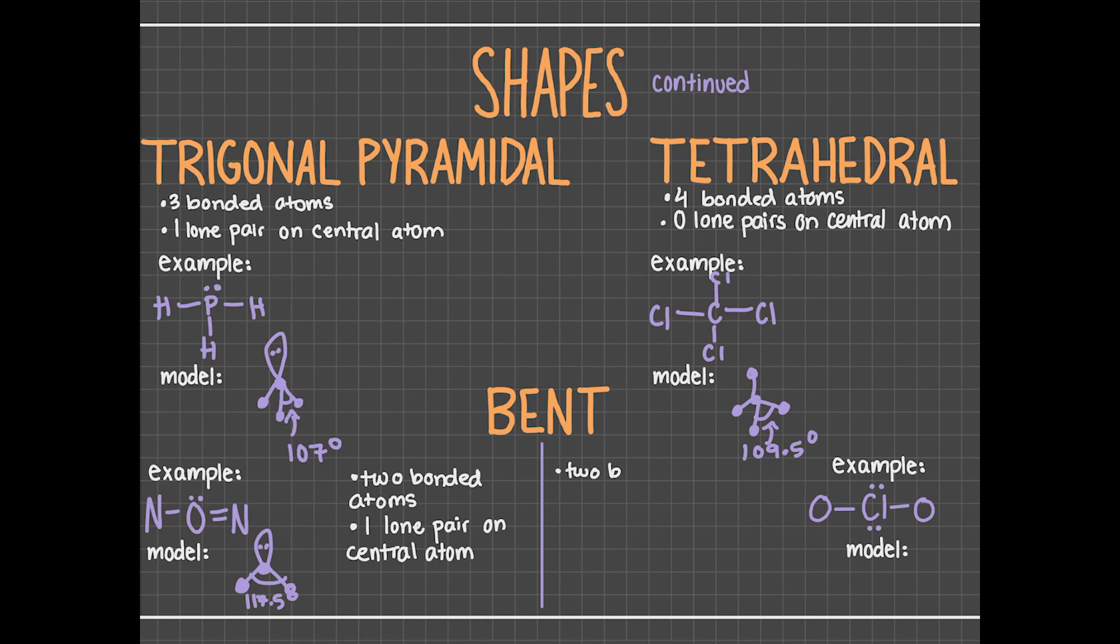Bent molecules may also have two bonded atoms and two lone pairs on the central atom. This bent molecule looks like the other bent molecule, with the exception of two balloon-like shapes drawn on the central atom to represent its two lone pairs. Each bond angle in this bent molecule will have a measure of about 104.5 degrees.